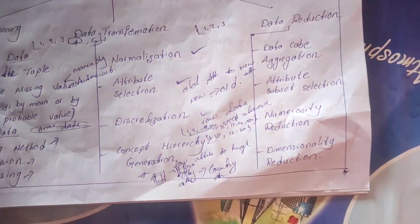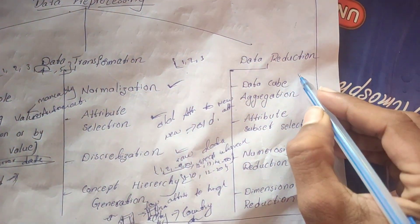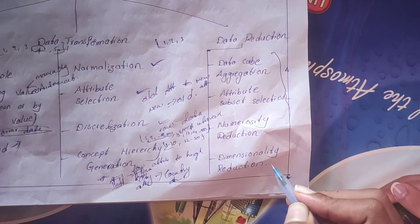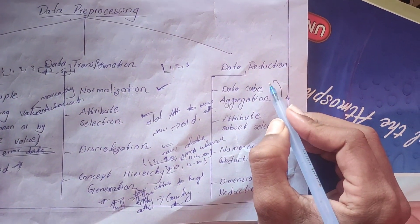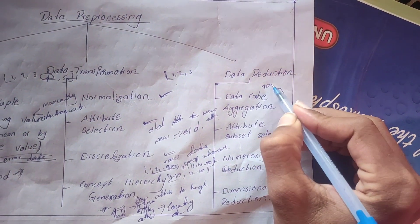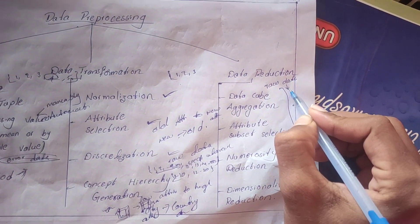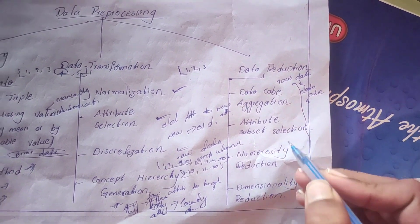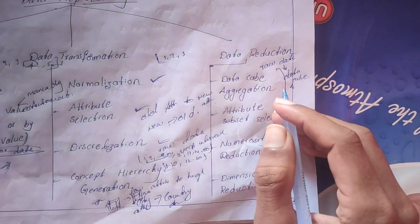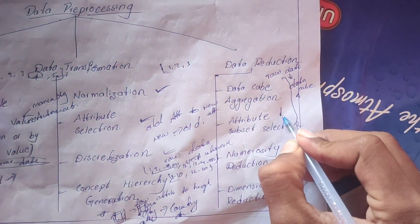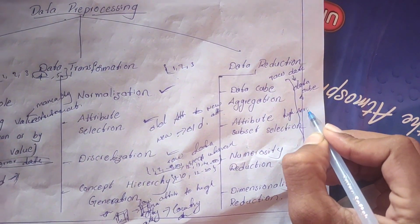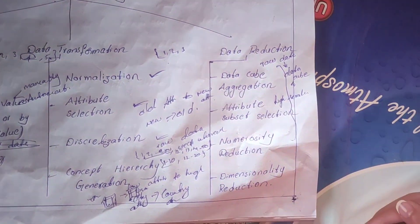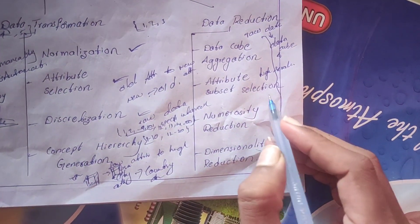In data reduction there are four methods: data cube aggregation, attribute subset selection, numerosity reduction, and dimensionality reduction. In data cube aggregation, raw data is converted and stored in a data cube format. In attribute subset selection, only highly relevant attributes are used and others are discarded.